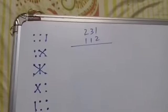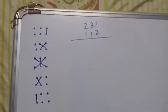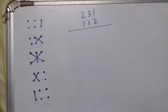Our example is 231 times 112. Let's start with these 8 steps.